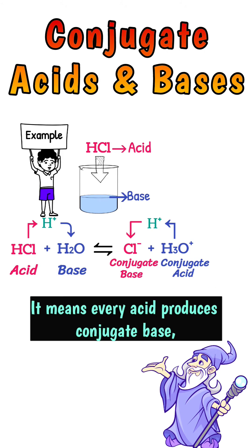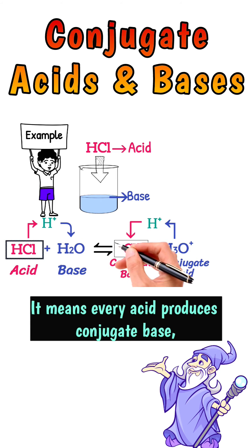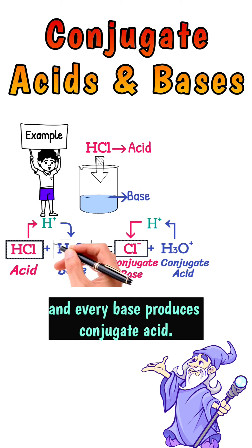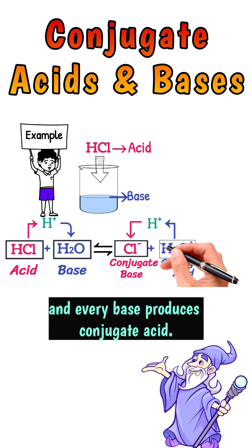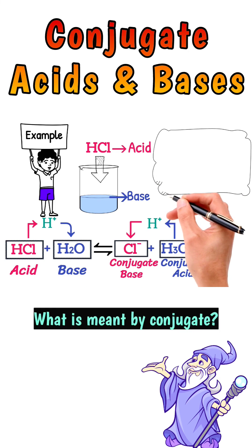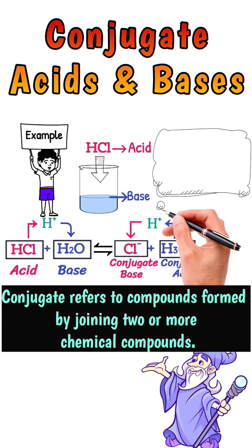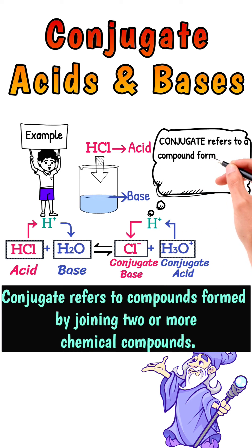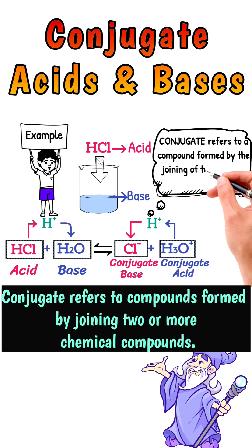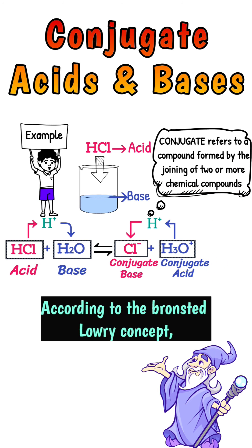It means every acid produces a conjugate base, and every base produces a conjugate acid. What is meant by conjugate? Conjugate refers to compounds formed by joining two or more chemical compounds.